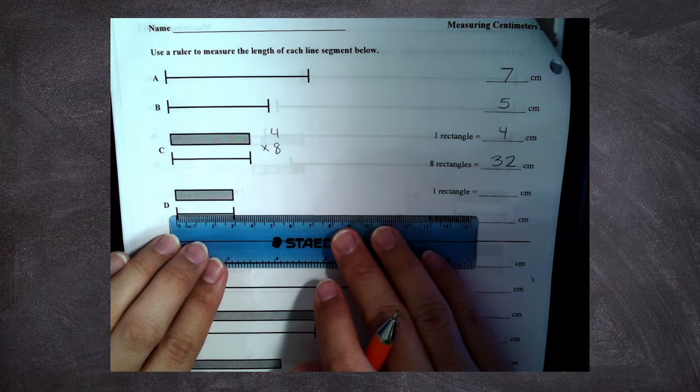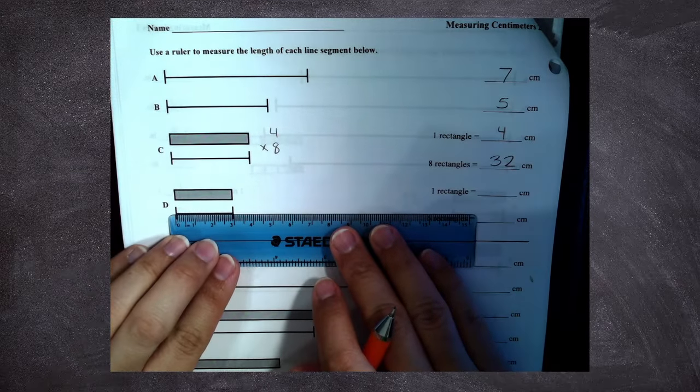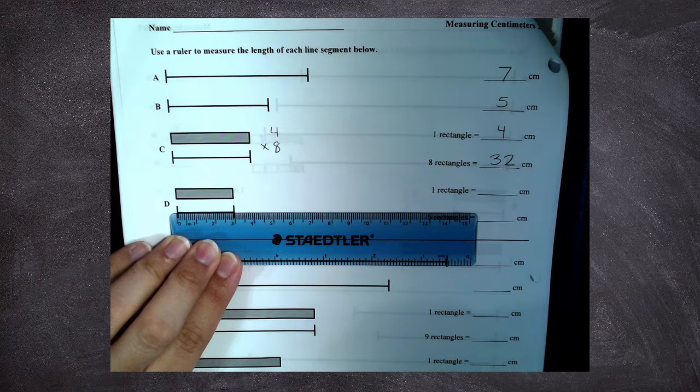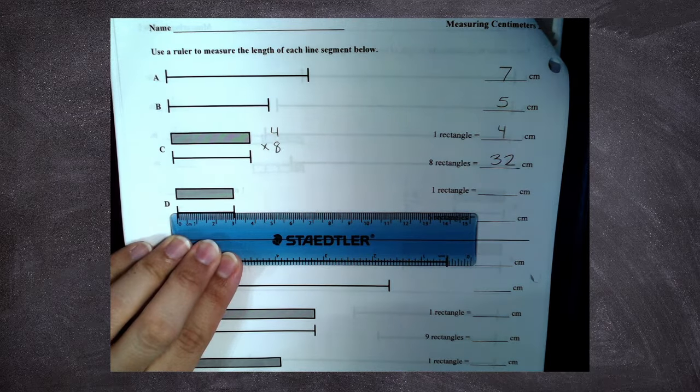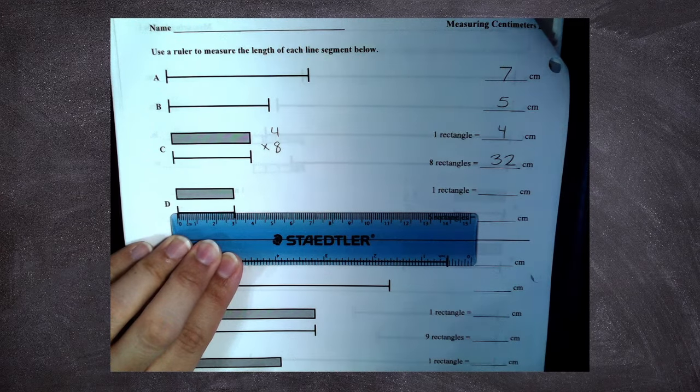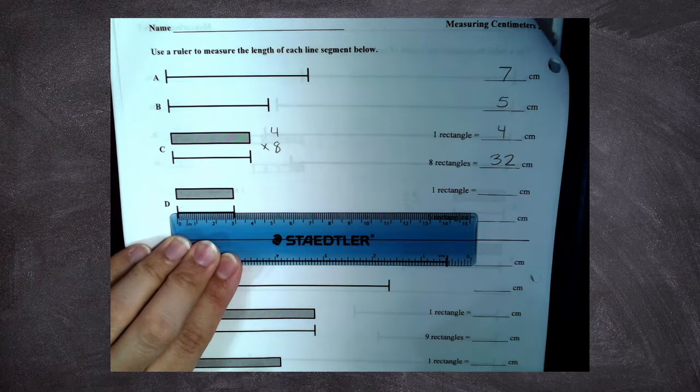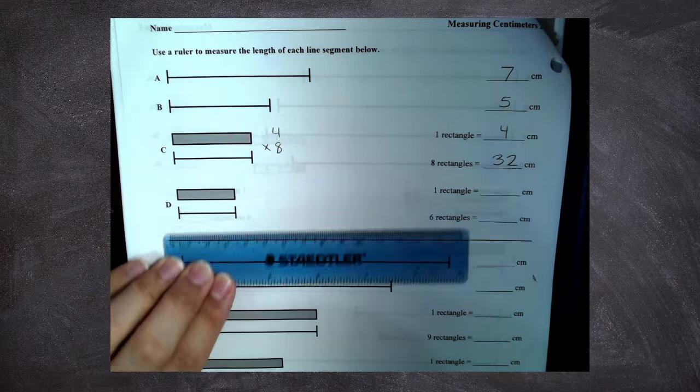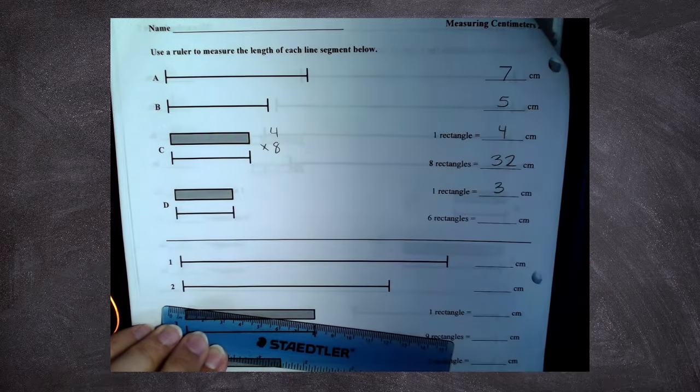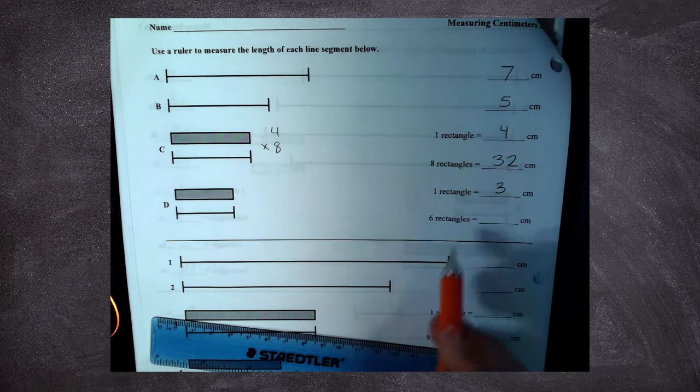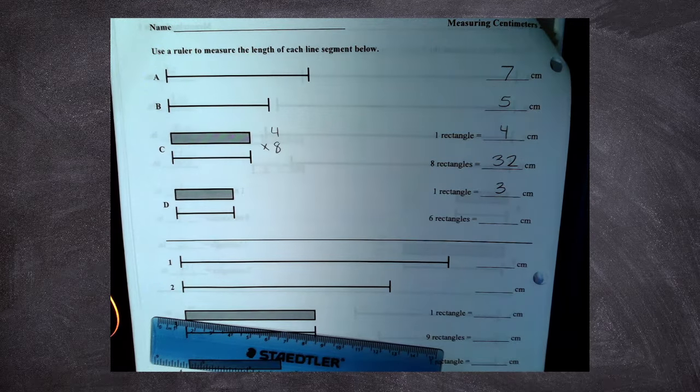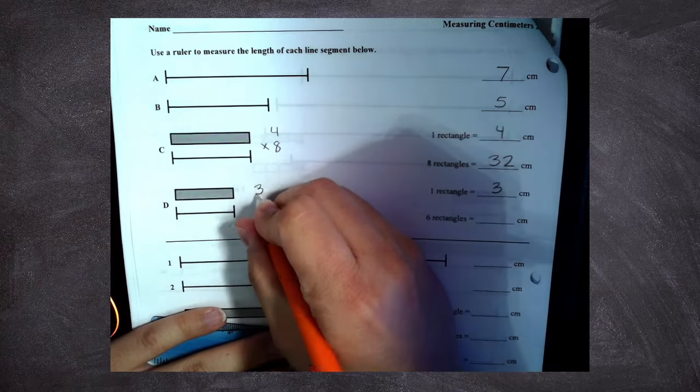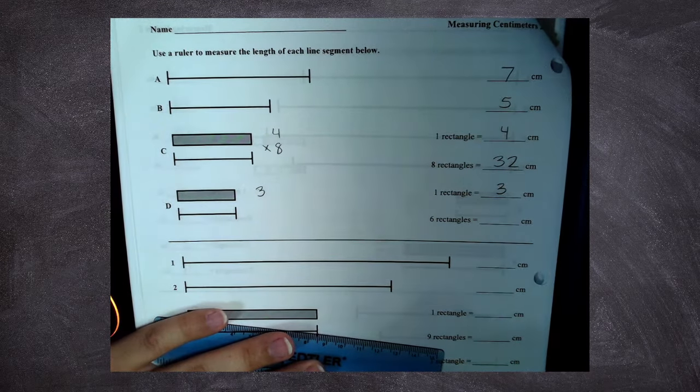All right. Problem D. How long is one rectangle for problem D? How many centimeters? Christopher. Now, Christopher, you said last time when they asked me about eight rectangles, I had to multiply. I'm going to do the same thing here. One rectangle is three centimeters.